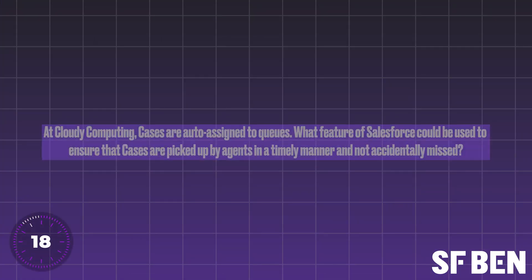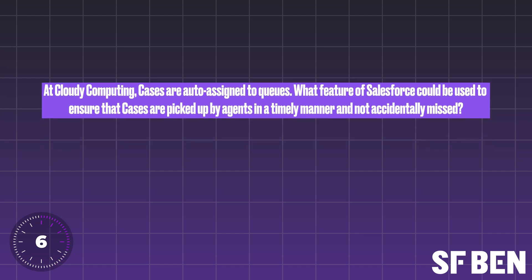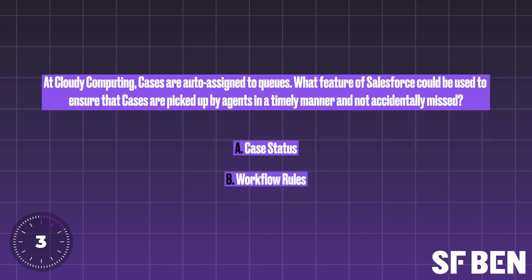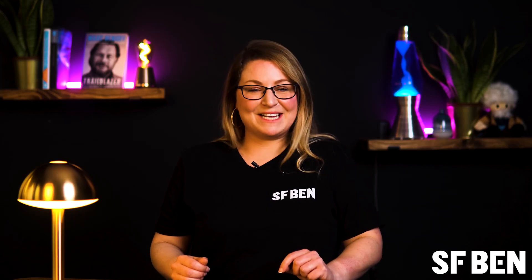Question seven. At Cloudy Computing, cases are auto assigned to queues. What feature of Salesforce could be used to ensure that cases are picked up by agents in a timely manner and not accidentally missed? A: Case status, B: Workflow rules, C: Case escalation rules, D: Case assignment rules. C is the right answer. Cloudy Computing could use case escalation rules to alert users that a case is a certain age, for example 24 hours old, and is unresolved so it needs attention.